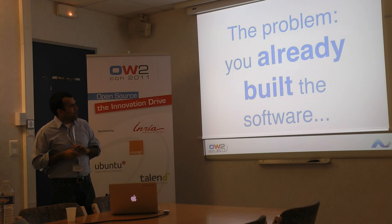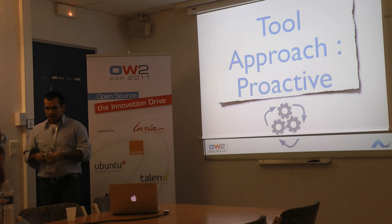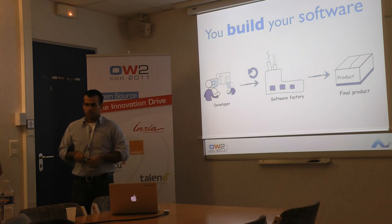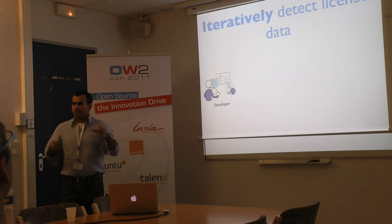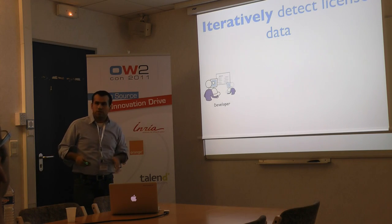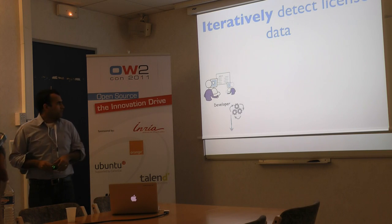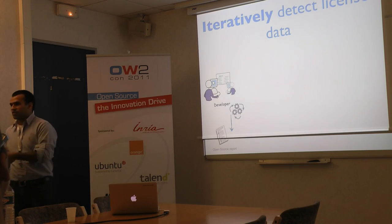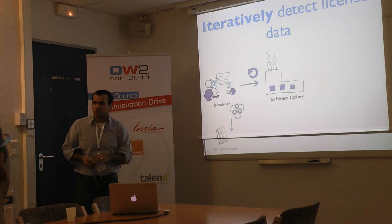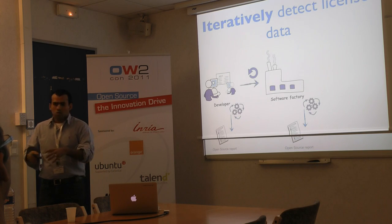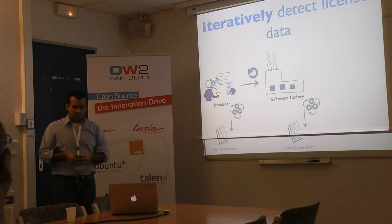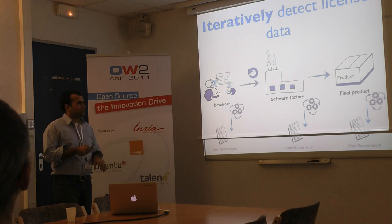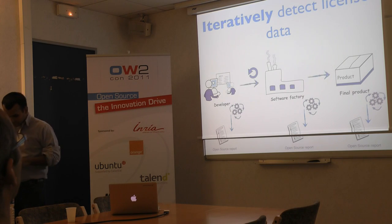This is where the alternative proactive approach appears. What you do is build your software as you typically do — you don't change almost anything. However, iteratively during the development process you execute these proactive tools. When developers are coding, the tool generates a report telling you what open source you have, whether you have a license violation or not. It goes to the next step on the software factory, executes again, and tells you the nature of that open source. Finally you get to ship your product and perform the final check. If that check is fine, you are ready to ship.